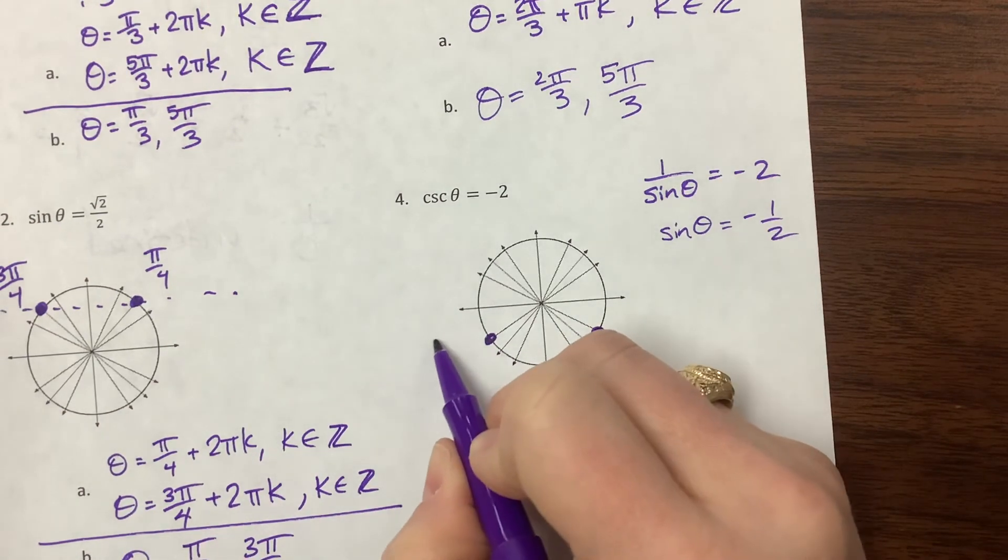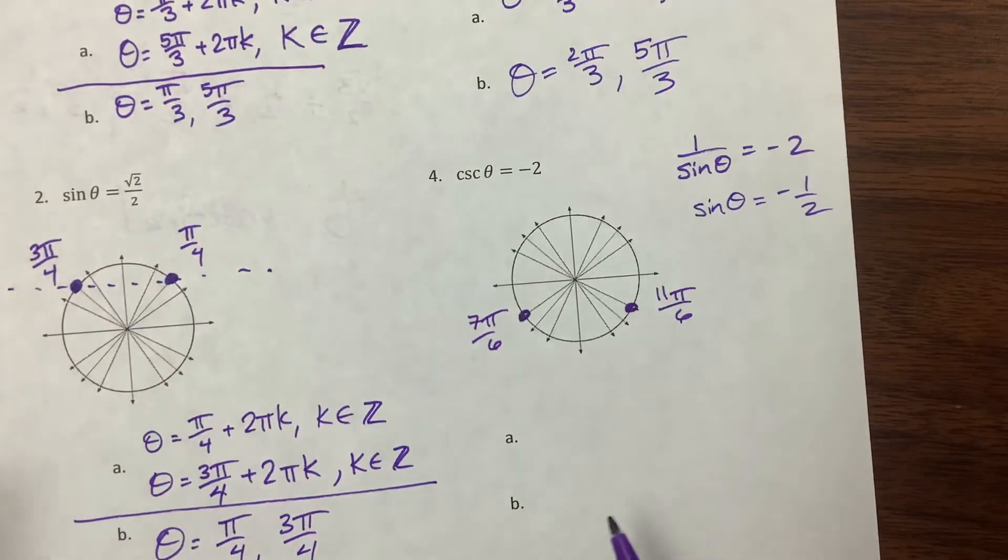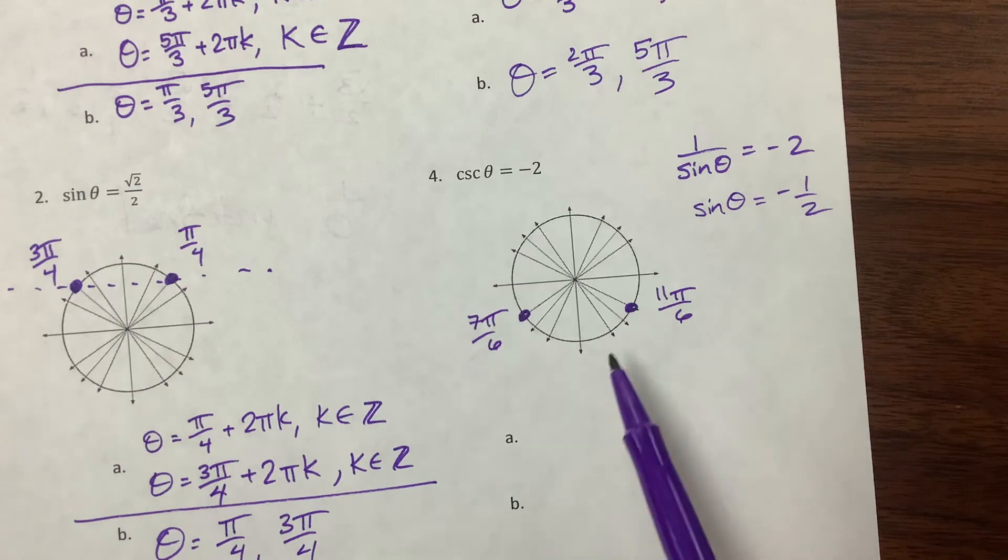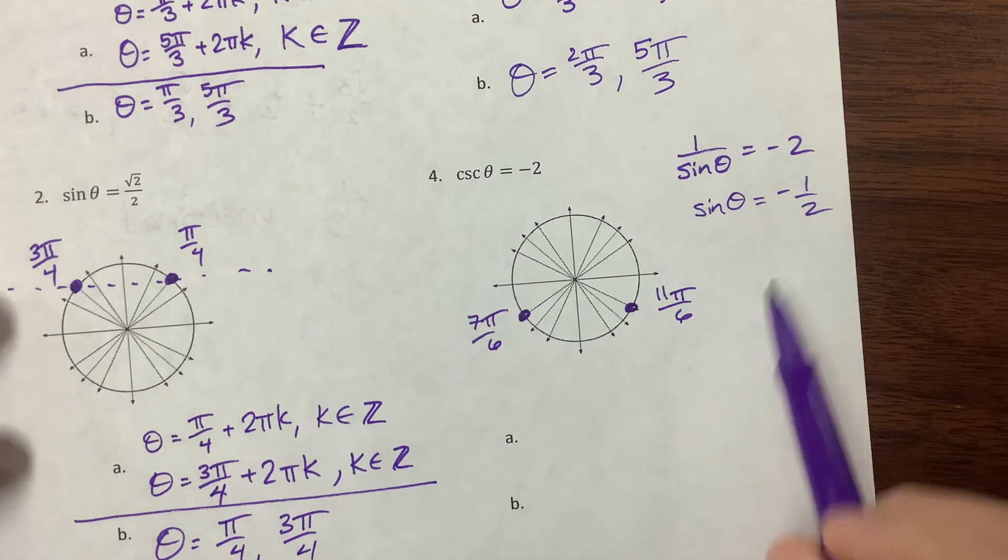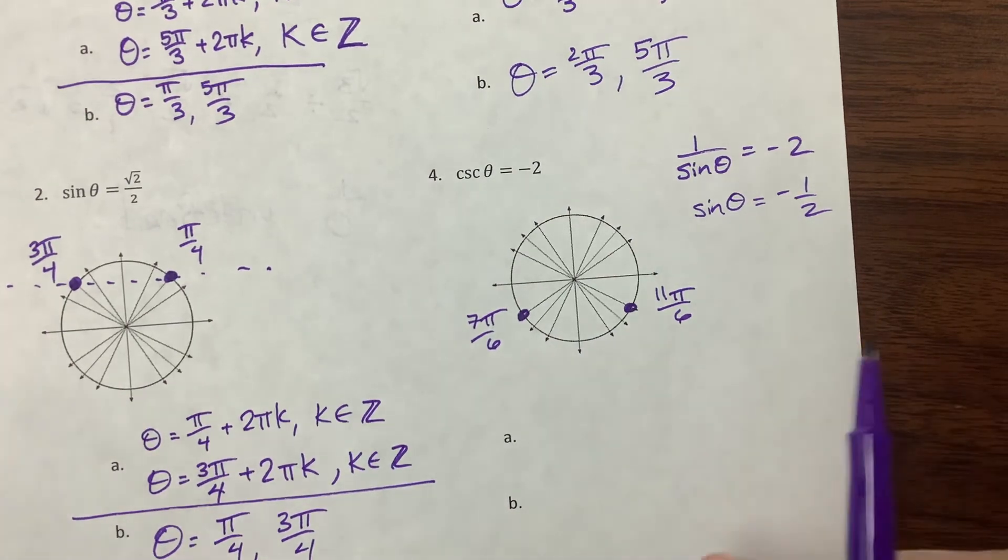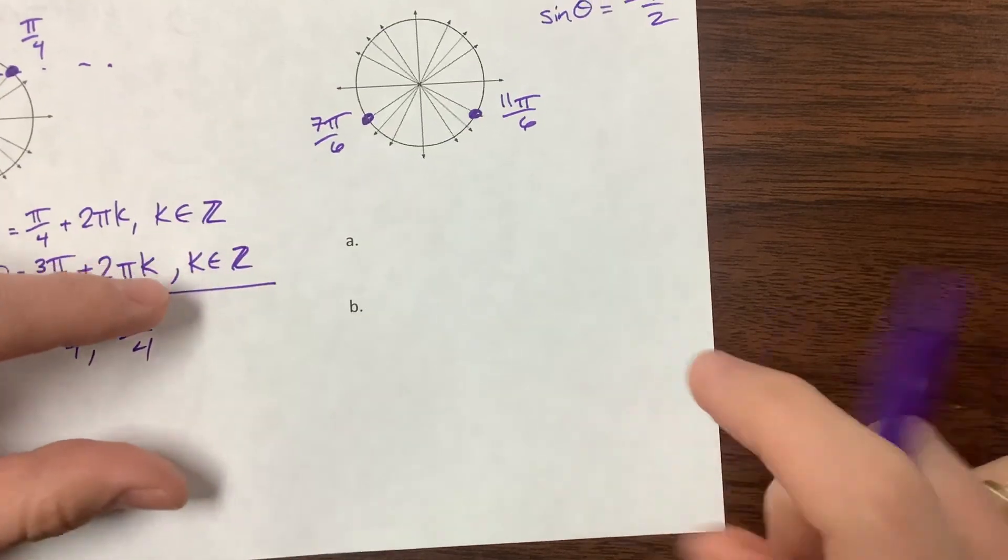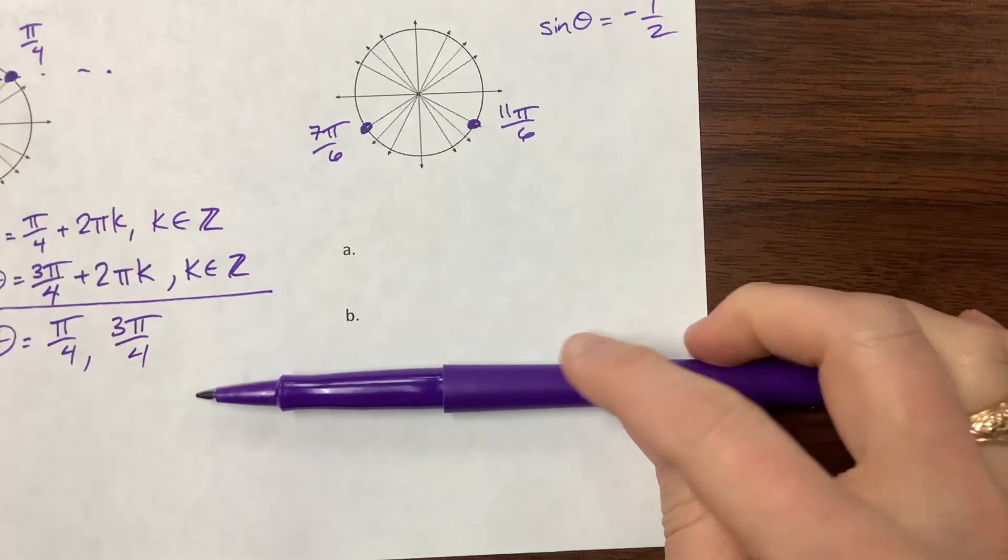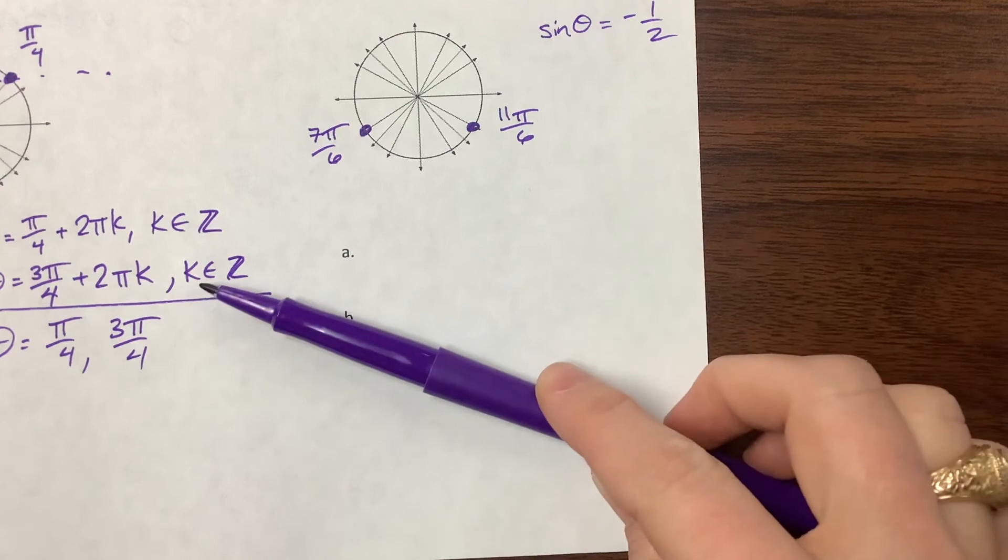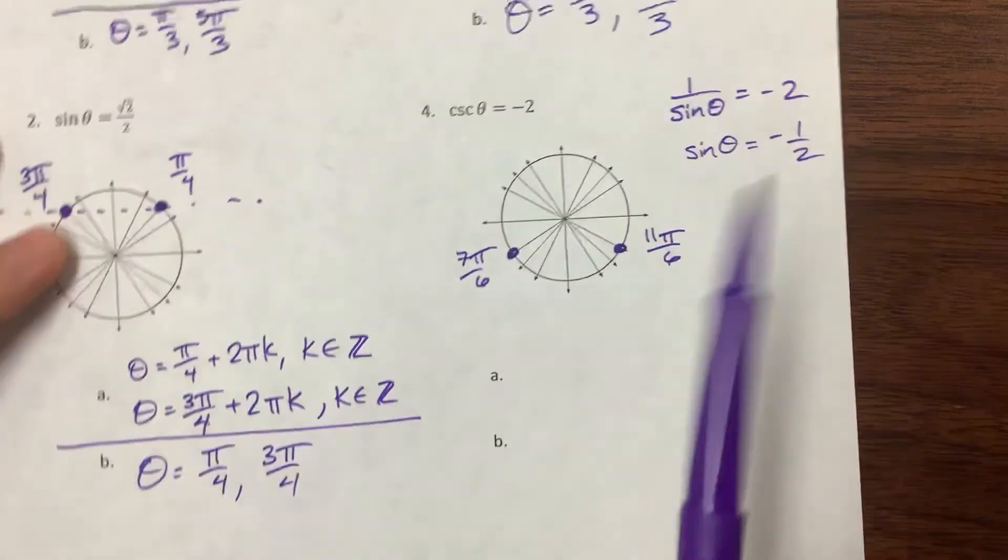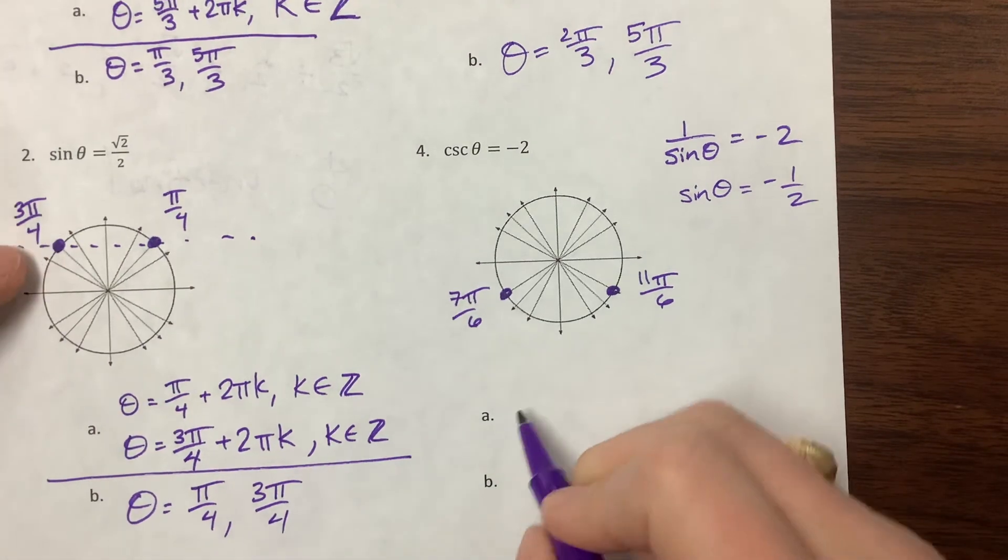And so this is 7 pi over 6 and 11 pi over 6. Now, I am not going to give you this many unit circles, and I expect you to get to a point where you don't need to see the unit circle. So what I do is I think through this in my head. Sine is my y value. I went down a little. And so, like, I'll think, what did I do? I went down a little. And that little bit means that I'm farther, like, that my, in quadrant 3, I went down just a little. That's that 7 pi over 6. And then my quadrant 4, I went down a little. That's 11 pi over 6. And the more you practice these without trying to visualize it, the faster you get, the better it gets.